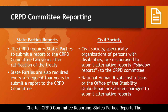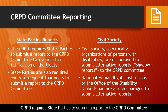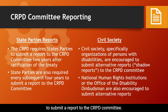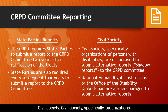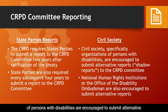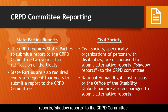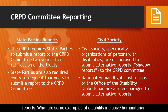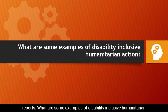CRPD Committee Reporting — States Parties Reports. The CRPD requires States Parties to submit a report to the CRPD Committee two years after ratification of the treaty. States Parties are also required every subsequent four years to submit a report to the CRPD Committee. Civil Society, specifically organizations of persons with disabilities, are encouraged to submit alternative reports — 'shadow reports' — to the CRPD Committee. National Human Rights Institutions or the Office of the Disability Ombudsman are also encouraged to submit alternative reports.